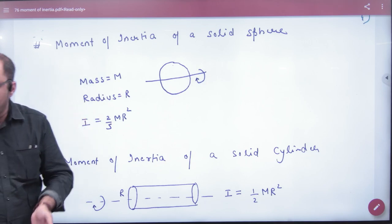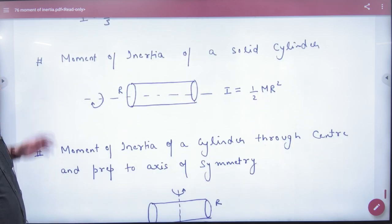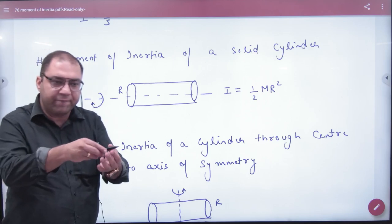So this will be the next formula. Now we will note the list of formulas. Next is moment of inertia of a solid cylinder. Solid cylinder means it is a cylinder, and if it is oriented like this...